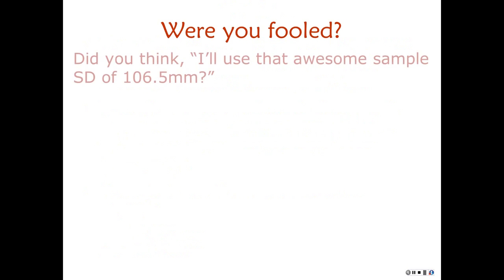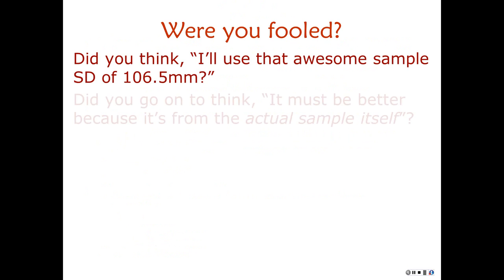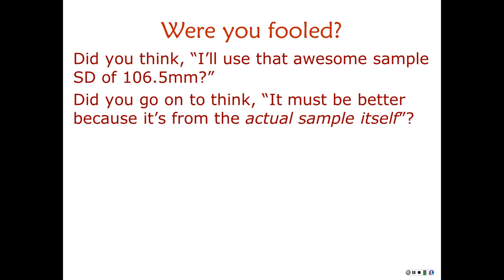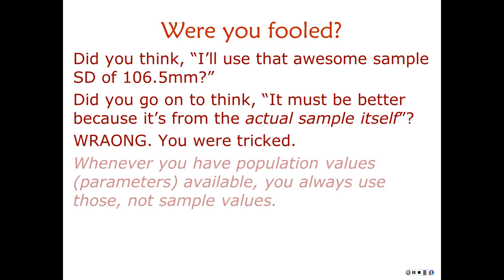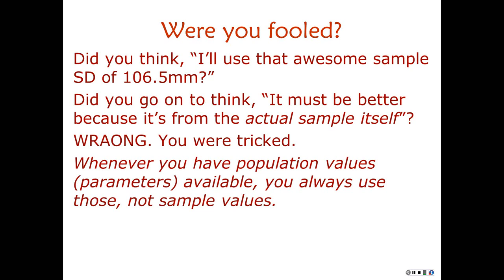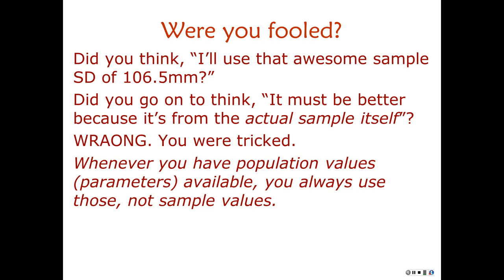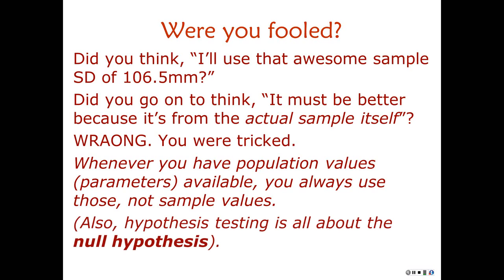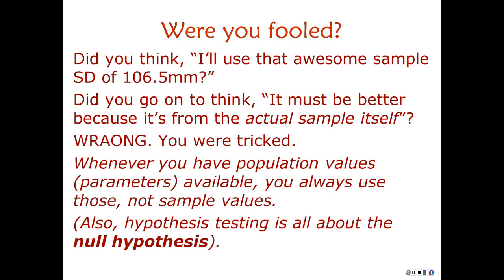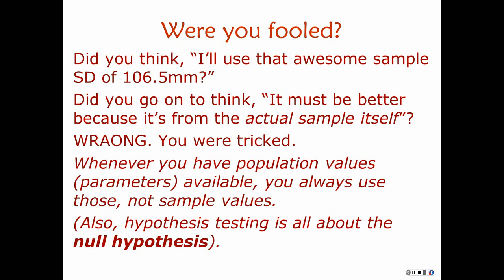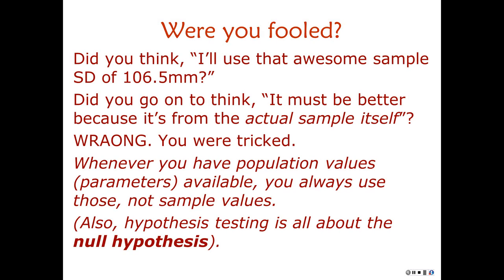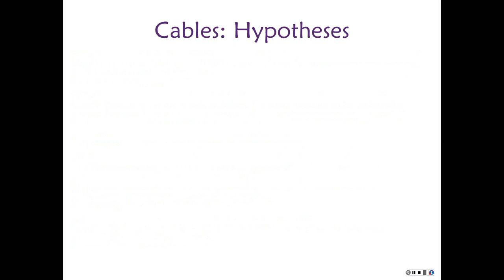Were you fooled into using the sample standard deviation of 106.5 millimeters? That would be wrong. Here's the rule: whenever you have a population value available, use the population value — it's always better than the sample value. We will use the population standard deviation of 124 millimeters, not the sample standard deviation. Since hypothesis testing is all about the null hypothesis, we know the standard deviation of the null hypothesis distribution.